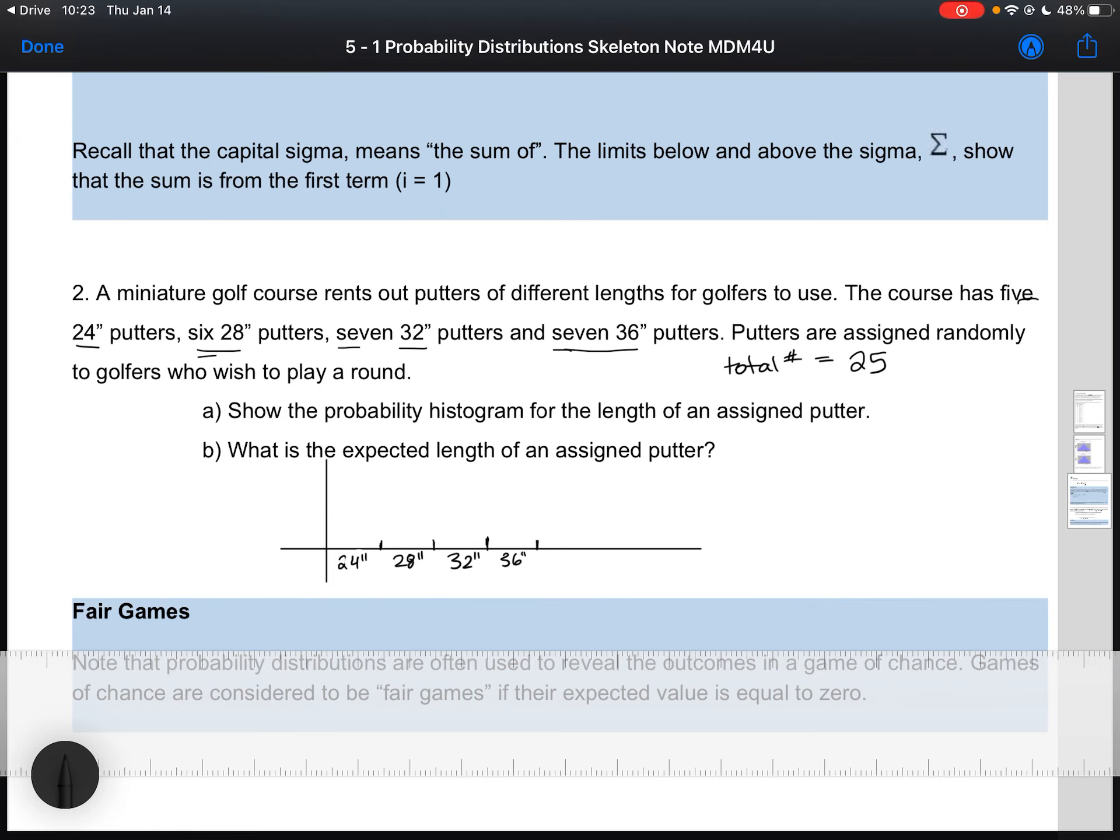That means the probability of getting a 24-inch putter is 5 out of 25, or one-fifth, or 0.2. My probability of getting a 28-inch putter is going to be 6 out of 25. The probability of getting a 32-inch putter is going to be 7 out of 25, the same as the probability of getting a 36-inch putter, also 7 out of 25.